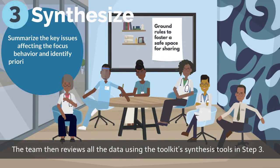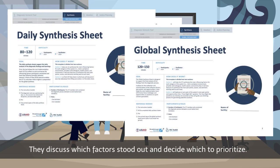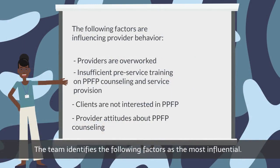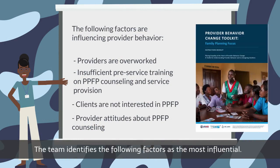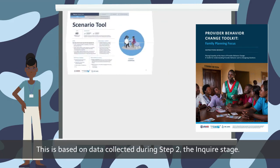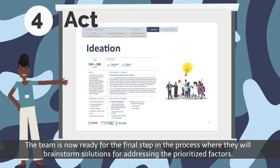The team then reviews all the data using the toolkit's synthesis tools in Step 3. They discuss which factors stood out and decide which to prioritise. The team identifies the following factors as the most influential. They choose provider attitudes about PPFP counselling as the most influential factor to focus on, based on data collected during Step 2, the enquire stage. The team is now ready for the final step in the process, where they will brainstorm solutions for addressing the prioritised factors.